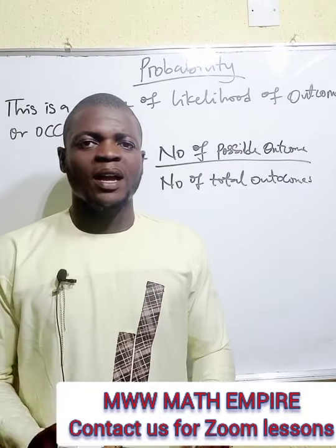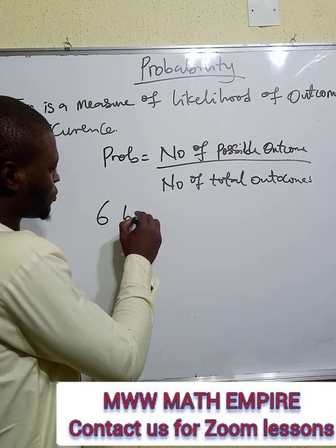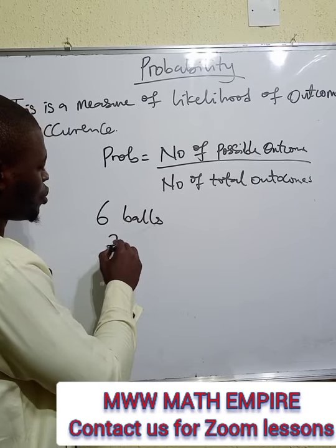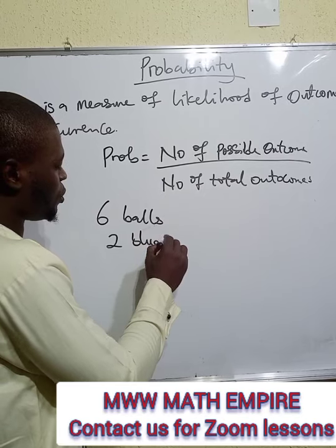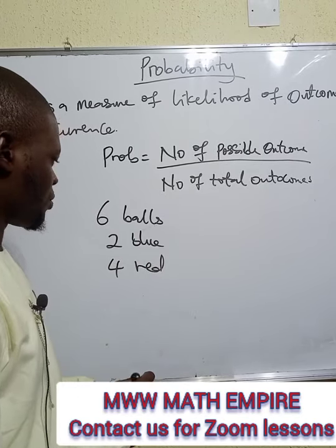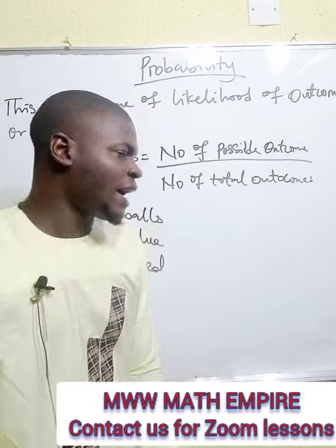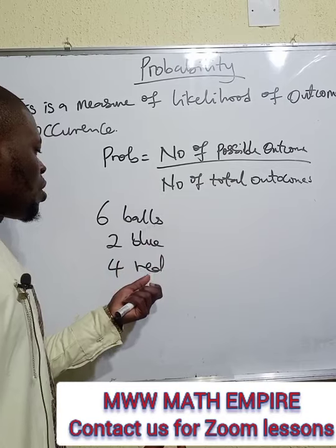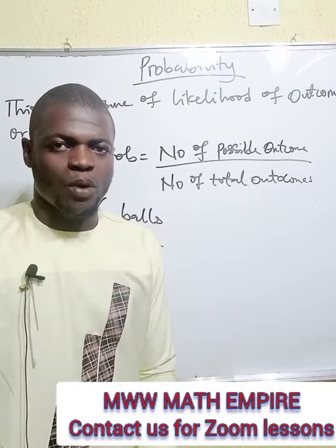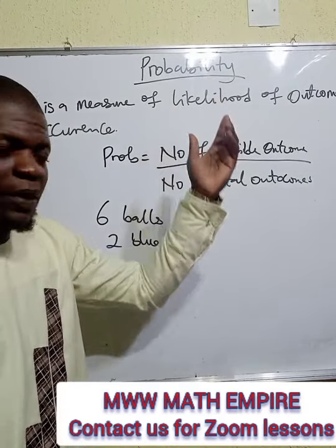Take for instance, in a bag I have six balls — two blue balls and four red balls. If I dip my hand inside the bag, I can get either blue or red. But if what I have in mind is to get a blue ball, would that be possible? This is where probability comes into play.